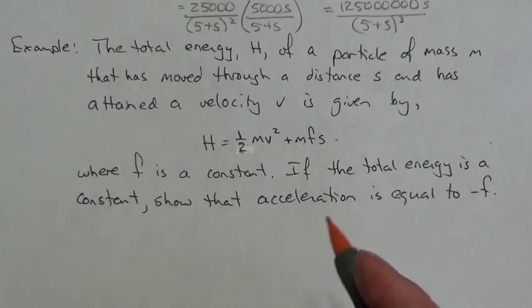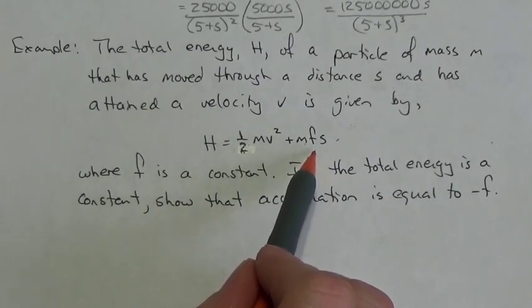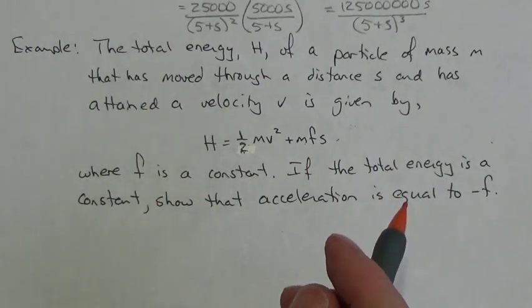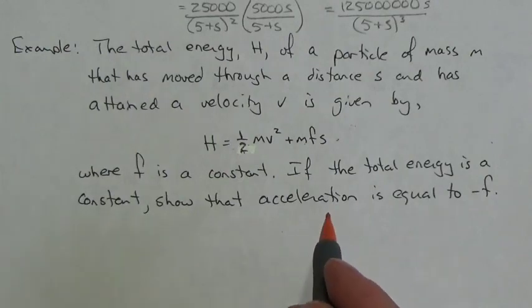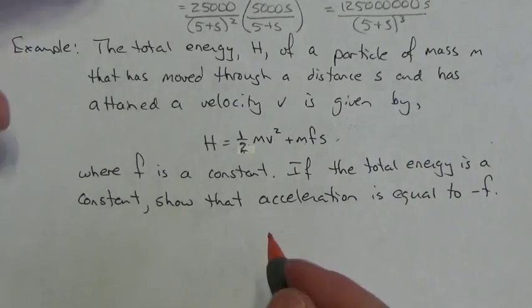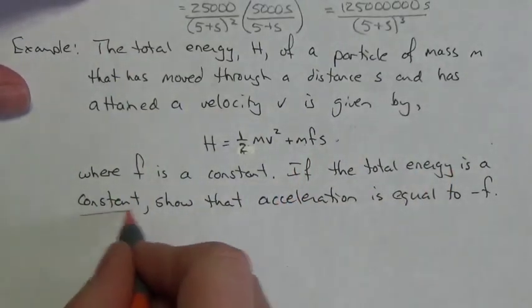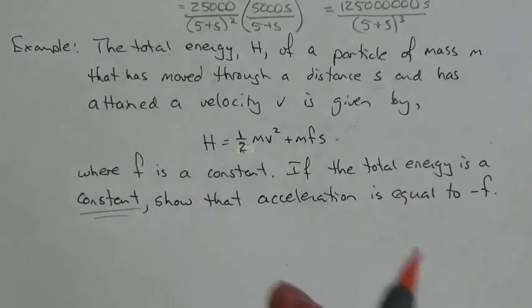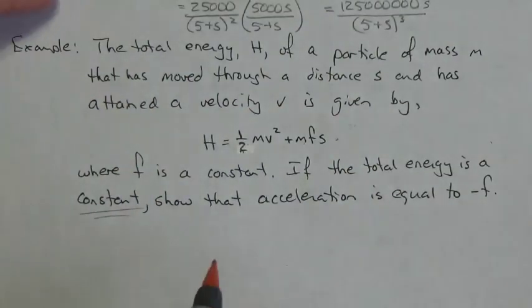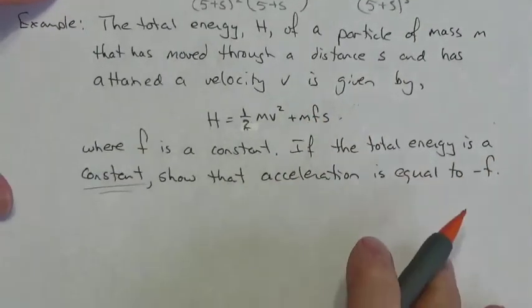If f is what usually goes in that place, many of you will recognize it as g, the acceleration due to gravity. If the total energy is a constant — which makes sense, since kinetic and potential energy switch in a system — we're going to show that acceleration equals negative f.